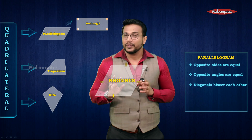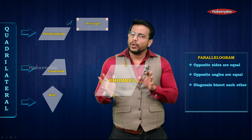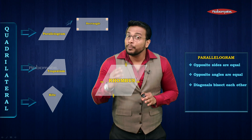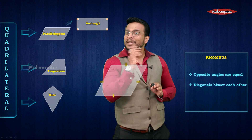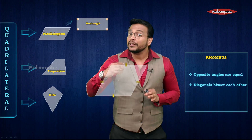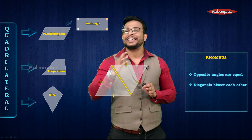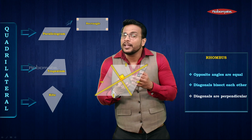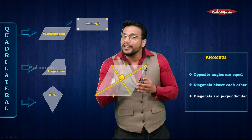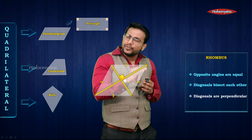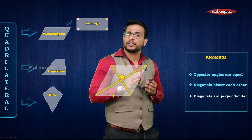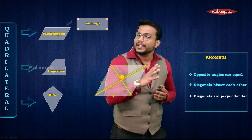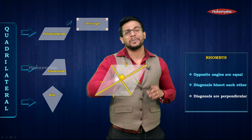When each side is equal, this becomes a rhombus. So every rhombus is a parallelogram. In a rhombus, all sides are equal. The properties are: opposite angles are equal, diagonals bisect each other, and one additional property — diagonals are perpendicular to each other.